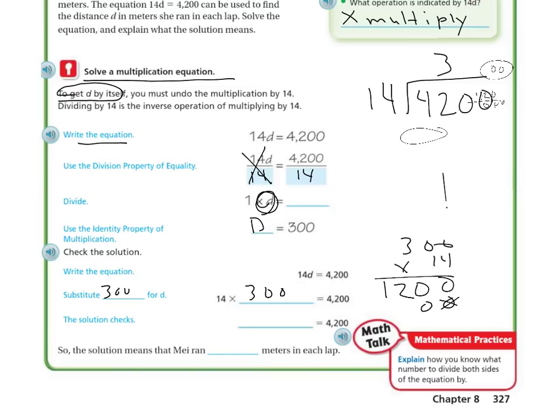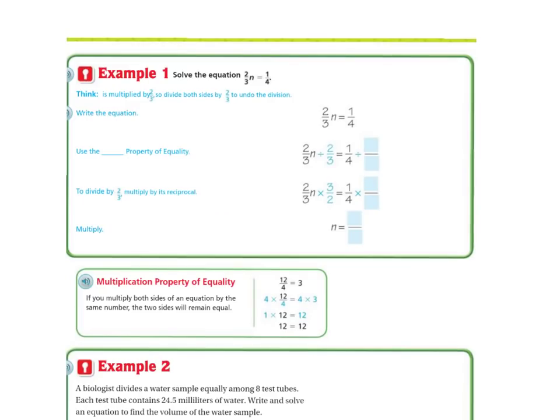We get 4,200. So that is correct. She ran 300 meters in each lap.